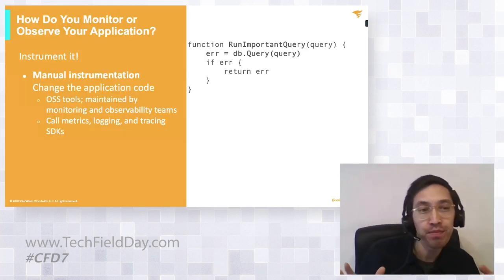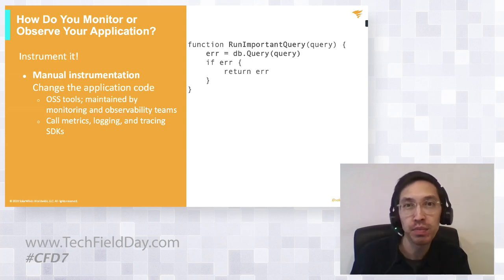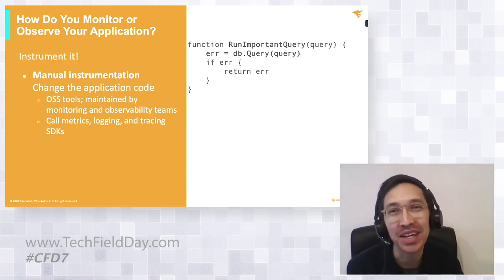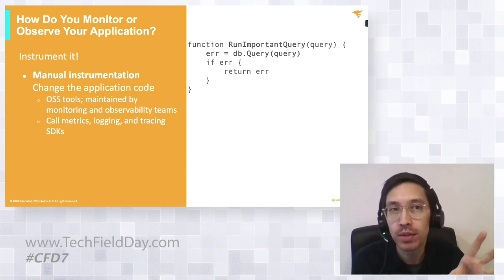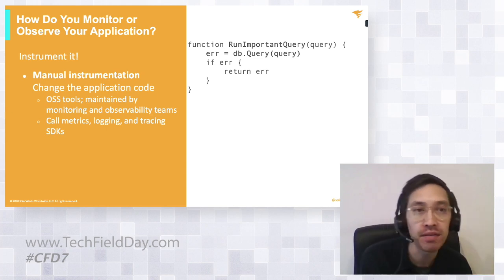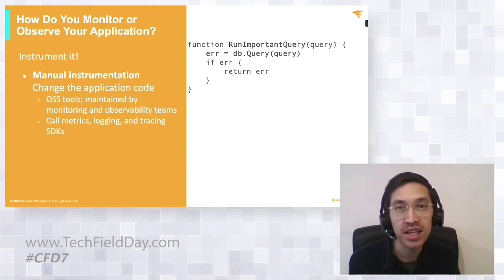Say you've got an application, you want to understand why it's slow, and you've got some code. On the right-hand side, there's a function in pseudocode — 'run important query' — that makes important queries, and you want to know how it's impacting the health of your application. The monitoring community would say you need to instrument this code by adding hooks to open source or vendor frameworks, whether maintained by your internal observability team or using something off the shelf, calling some kind of metrics, logging, or tracing SDK.